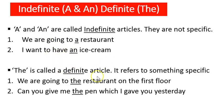As far as 'the' is concerned, it is called a definite article because it refers to something specific. For example, 'We are going to the restaurant on the first floor' — not the second or third floor, but the one on the first floor. So this is very specific, hence we use 'the.' Similarly, 'Can you give me the pen which I gave you yesterday?' — the one I gave you yesterday, very specific. So a and an are indefinite articles and the is a definite article.